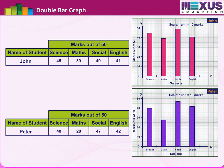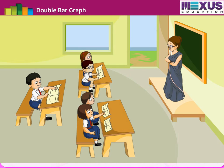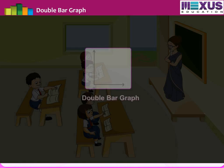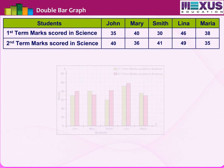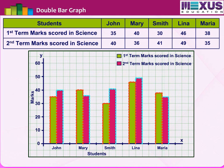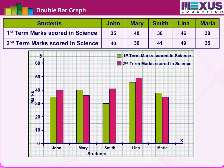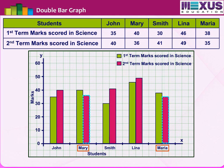Let us learn how to use a double bar graph. Suppose a teacher wants to compare the marks of five students along with their first and second term marks, to get information about their performance term-wise in a particular subject. She uses a double bar graph. First, she tabulates the marks, then makes bars for the first and second term for each student in the same graph. From this graph, she can easily see that John, Smith, and Lena have improved their performance.